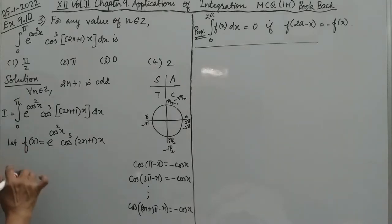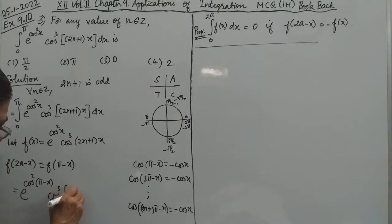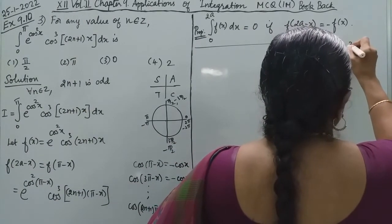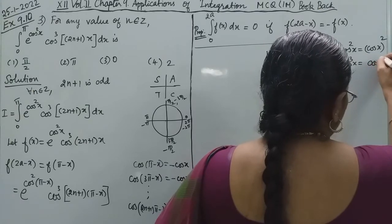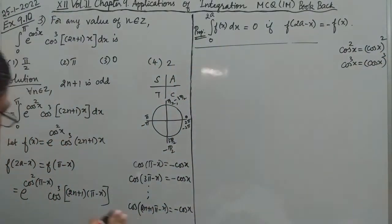Now to apply this property, let me find what is f(2a-x). So f(2a-x), 2a is the upper limit, that is f(π-x). That equals e^(cos²(π-x)) times cos³(2n+1)(π-x). One thing: cos²x is cos(x) to the power 2, and cos³(x) is cos(x) to the power 3.